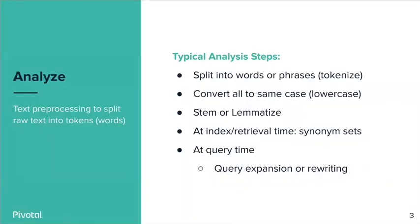The analysis step essentially involves text preprocessing steps that include, among other things, splitting the raw text into words or phrases — sometimes you'll hear that referred to as tokenizing. Then there's a step to convert things to all the same case, for example lowercase. There are also other steps whose goal is to normalize the text and get rid of variation you don't care about, one of which is stemming or lemmatizing, which I'll go over in the next slide in a little more detail.